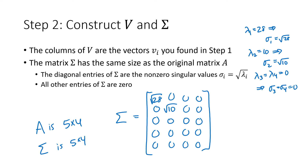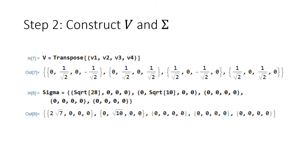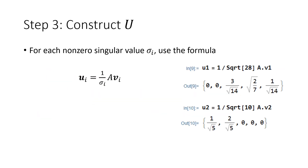If you run out of room in Sigma — that is, if you have more singular values than rows — you end up throwing out some singular values, but the only ones ever discarded are zeros, so no information is lost. Here's how we type Sigma into Wolfram: we already have capital V from the previous step, and we just type in Sigma by hand.